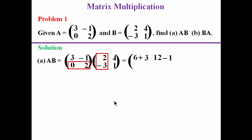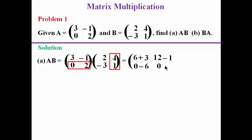We multiply the corresponding elements and add: 0 times 2 gives 0, and 2 times negative 3 gives negative 6. For the second row and second column: 0 times 4 gives 0, 2 times 1 gives 2, so 0 plus 2.